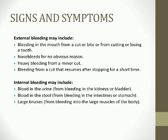External bleeding signs include bleeding in the mouth from a cut, bite, or dental procedure; nosebleeds without reason; heavy bleeding from a minor cut; and bleeding that resumes after briefly stopping. Internal bleeding includes blood in the urine from kidney or bladder bleeding, and blood in the stool (melena) from intestinal or stomach bleeding.